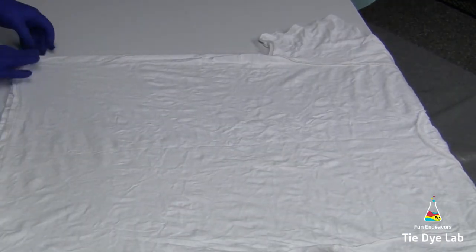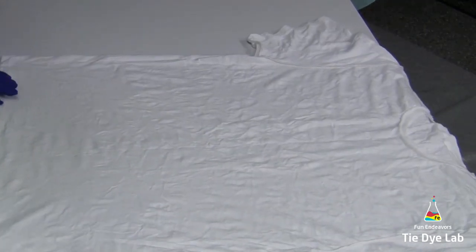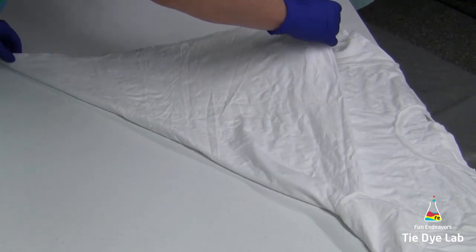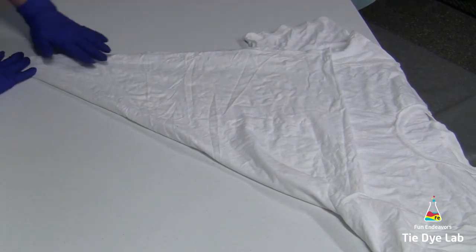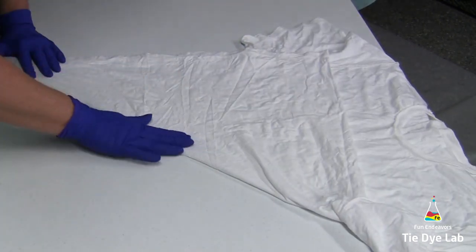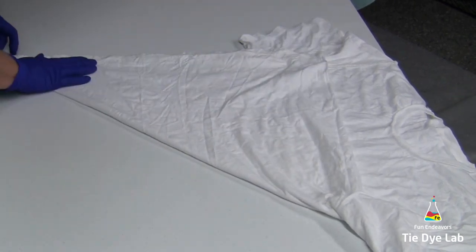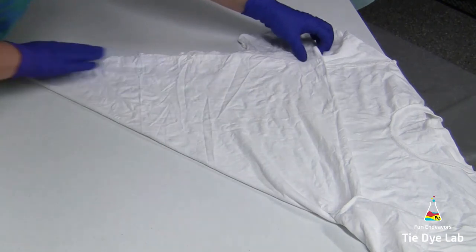Hi guys, it's Angie with Fun Endeavors Tie-Dye Lab. Today I'm making a star flower shirt starting at the corner. I'm going to fold the hem of my shirt up to the side and then fold it back again.